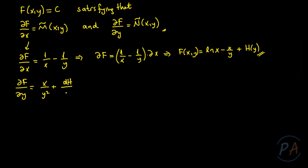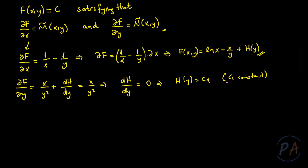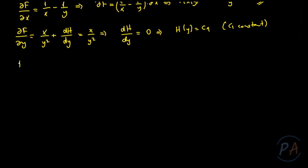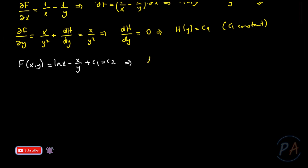The derivative of minus x/y with respect to y gives x/y², plus dh/dy equals N-tilde which is x/y². So dh/dy equals 0, meaning h of y equals some constant c₁. Therefore the solution f of xy is ln|x| minus x/y plus c₁ equals c₂, which simplifies to ln|x| minus x/y equals c, where c equals c₂ minus c₁ is a constant.